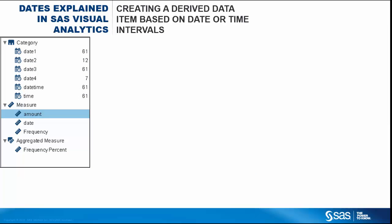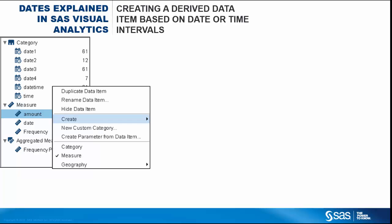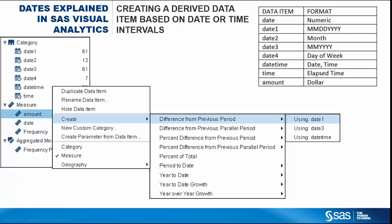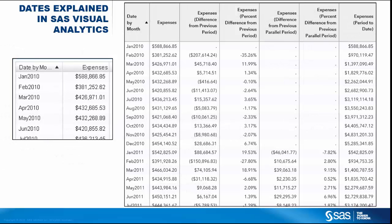Having data items whose format displays a year value also enables you to create derived data items for reports that are based on time intervals. Do this by right-clicking on a measure data item and selecting the Create option to display a list of possible derived items. When you click on one of the intervals, a selection list displays showing only the data items whose format would display a year. In the case of our data, the only data items supported for the intervals are Date 1, Date 3, and Date Time. The values of some of these derived data items are illustrated in a list table using data that contains a date-by-month data item and an expenses data item, spanning 2010 to 2011.